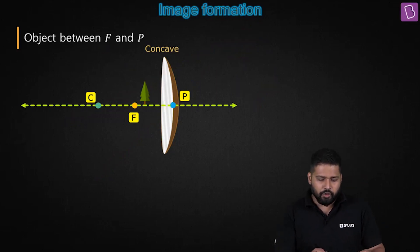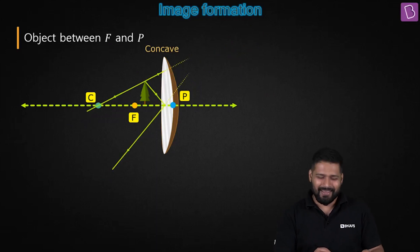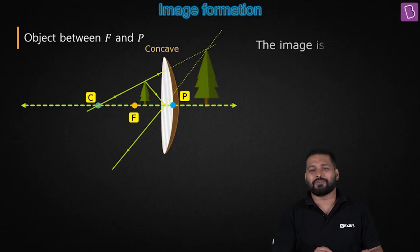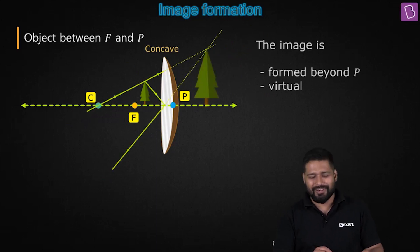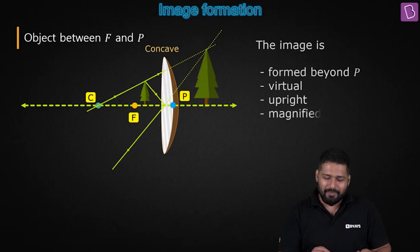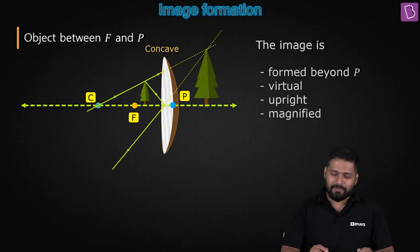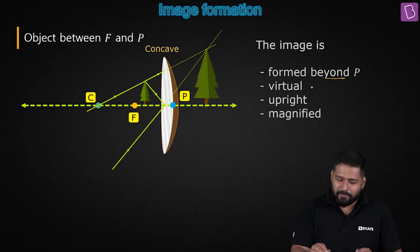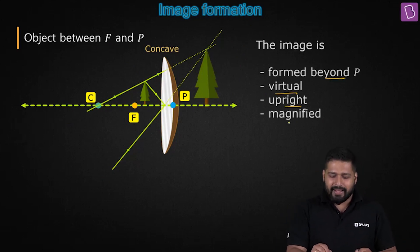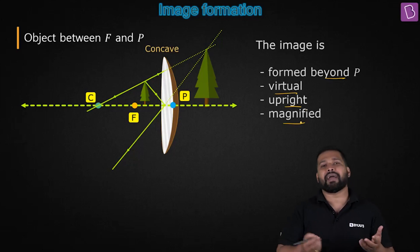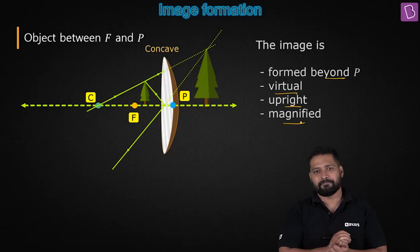Let me show you a proper diagram. If you take these two rays, they appear to meet behind the mirror, and the image formed is beyond P — it is virtual, upright, and magnified.